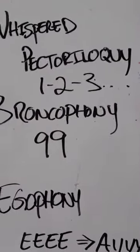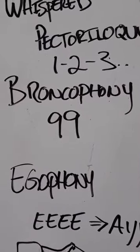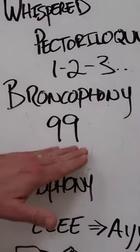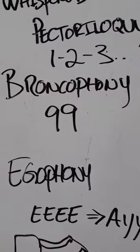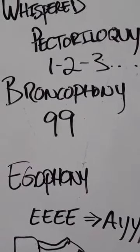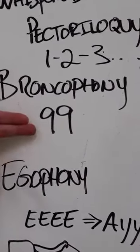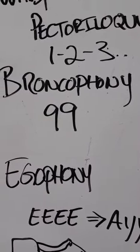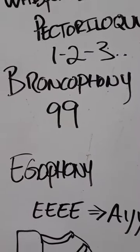There's another term called bronchophony. This is another type of pectoriloquy but in this situation what we do is we have them repeat the term ninety-nine. In a situation where you have consolidation the ninety-nine will be transmitted and easily heard whereas in a normal lung it will be muffled.